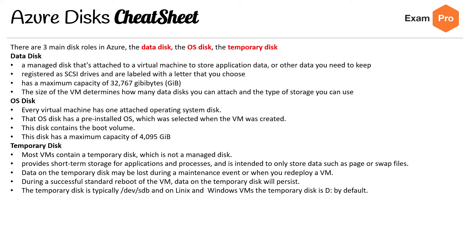The temporary disk is typically /dev/sdb on Linux. For Windows VMs, the temporary disk is D: by default, and it's not encrypted by SSE unless you enable encryption at the host.